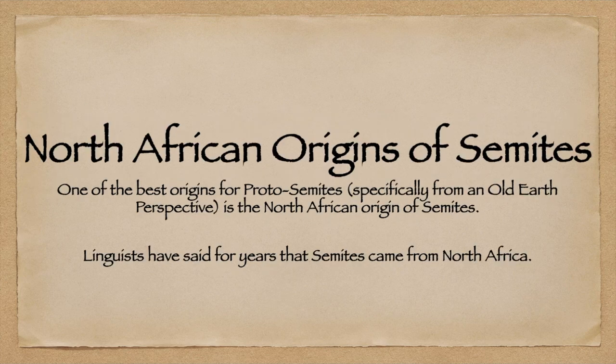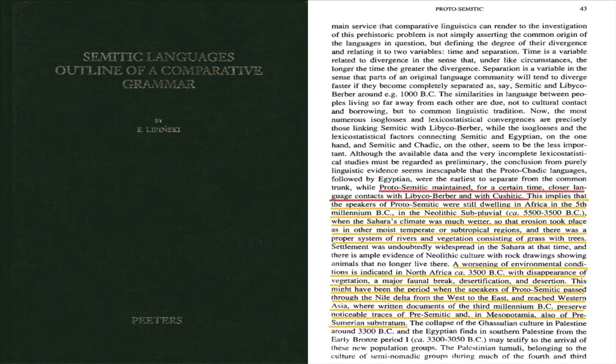One of the best origins for proto-Semites, specifically from an older perspective, is the North African origin of Semites. Linguists have said for years that Semites came from North Africa. This is from Semitic Languages: Outline of a Comparative Grammar by E. Lipsky. It says this implies that the speakers of proto-Semitic were still dwelling in Africa in the fifth millennium BC, in the Neolithic subpluvial, circa 5,500 through 3,500 BC, when the Sahara's climate was much wetter, with a proper system of rivers, vegetation, grass, and trees.